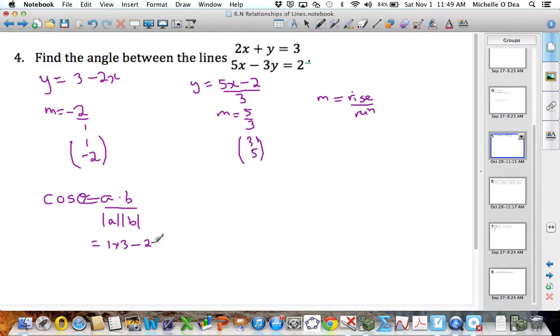All over the magnitude of a, so that's 1 squared plus (-2) squared is 4, and then the magnitude of b, that's 3 squared is 9 plus 5 squared is 25. Simplifying all of that: 3 minus 10 is -7, and we'll have root 5 times root 34, which is root 170.